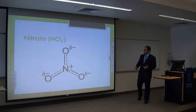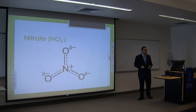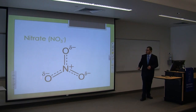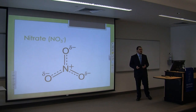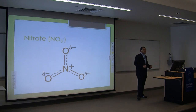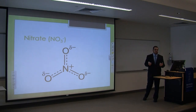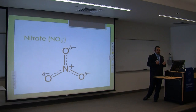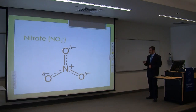Here's nitrate. It's an ion, it's water soluble, and it holds a negative charge. Because it is water soluble, the plant is able to pull it into itself by bringing in more water, and when it brings in more water, most likely there's going to be nitrate in there.